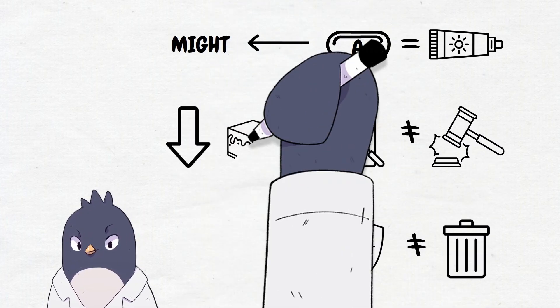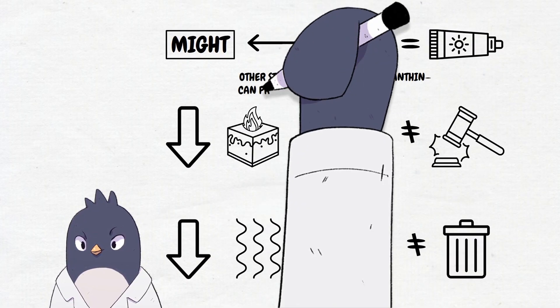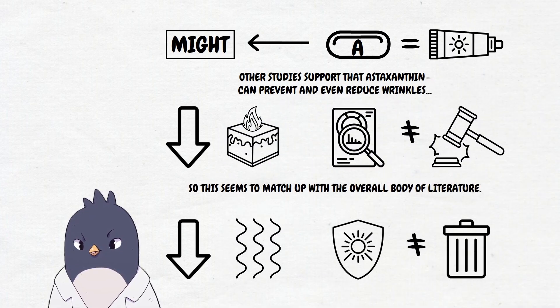Astaxanthin might reduce skin inflammation from UV light exposure, and it might help prevent wrinkles over time. Other studies support that astaxanthin can prevent and even reduce wrinkles, so this seems to match up with the overall body of literature.